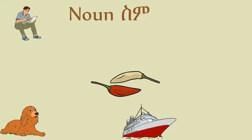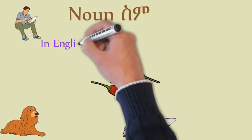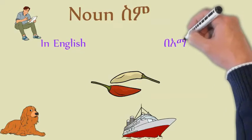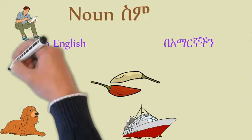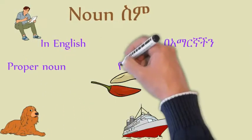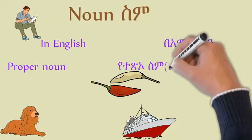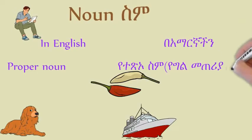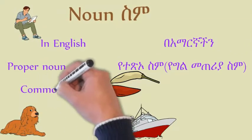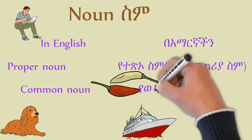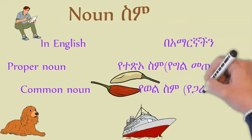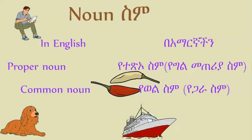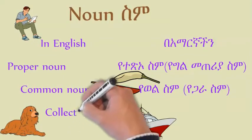We will discuss three types of nouns today. Three types of nouns. The first one is in English, and we'll see the same in Amharic. We have the same thing in both Amharic and English. For instance, we say proper noun. Then there is a common noun, and collective noun.